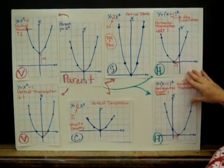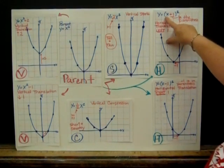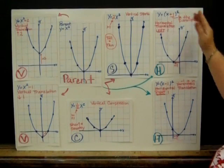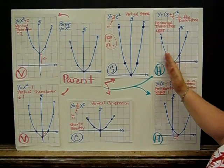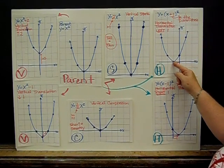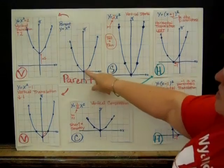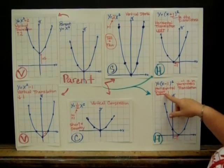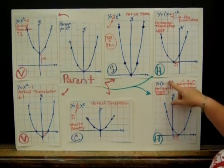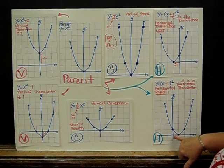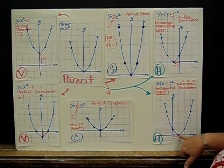Over here, we have our horizontal translations. Notice in this one, y=(x+1)². Our +1 is in the parentheses, so that tells us it's affecting the right and left direction. Plus 1, so we're going to move left one place. It's just like the parent; we slid it one place to the left. Here's another horizontal translation, (x-1)². The -1 is in parentheses, so that tells us we're going to move right one place.